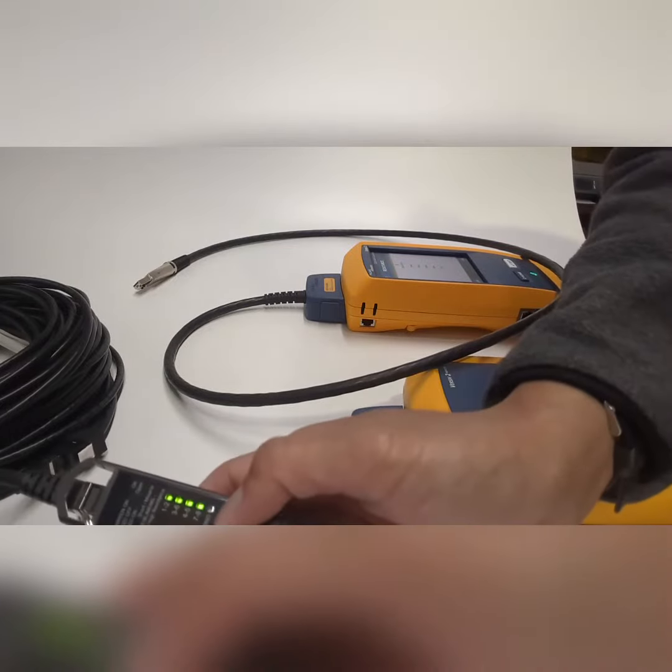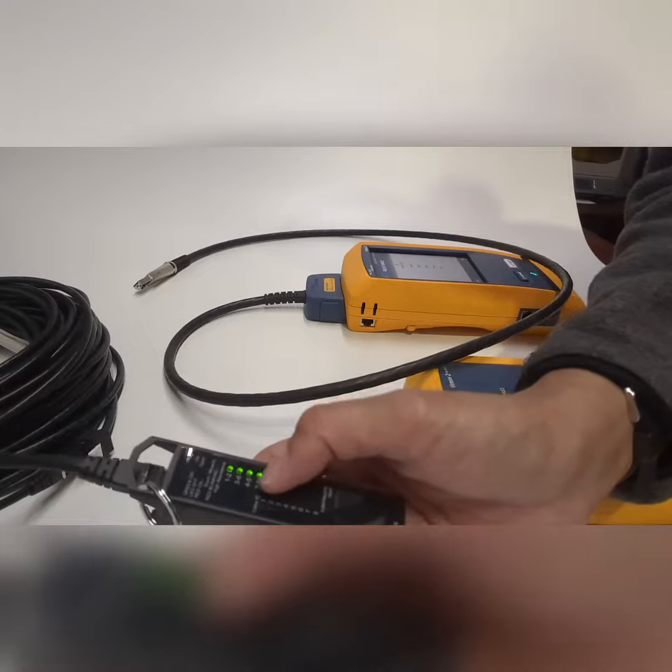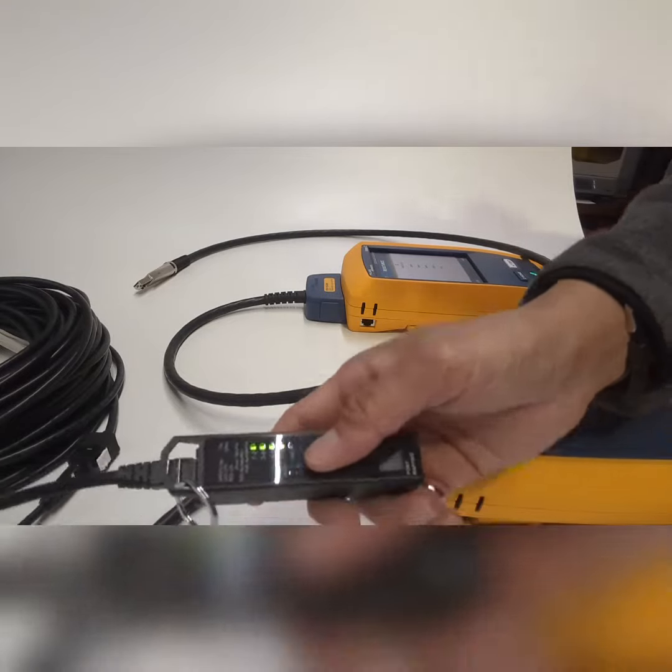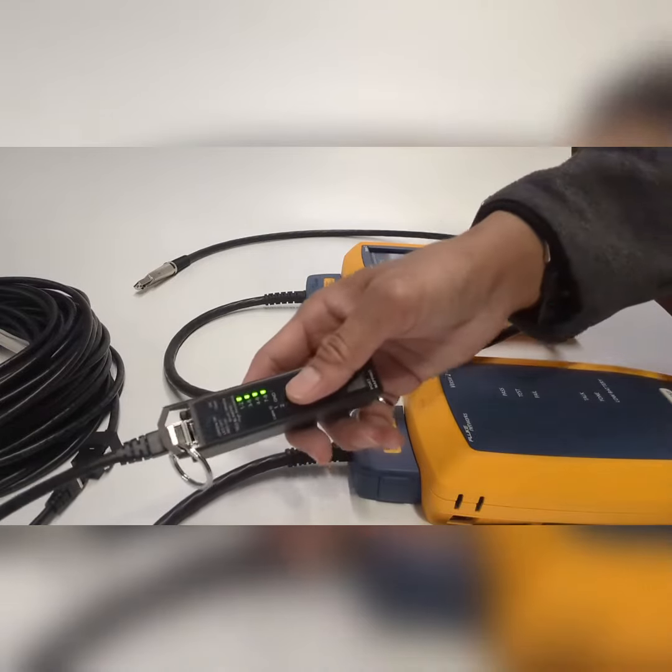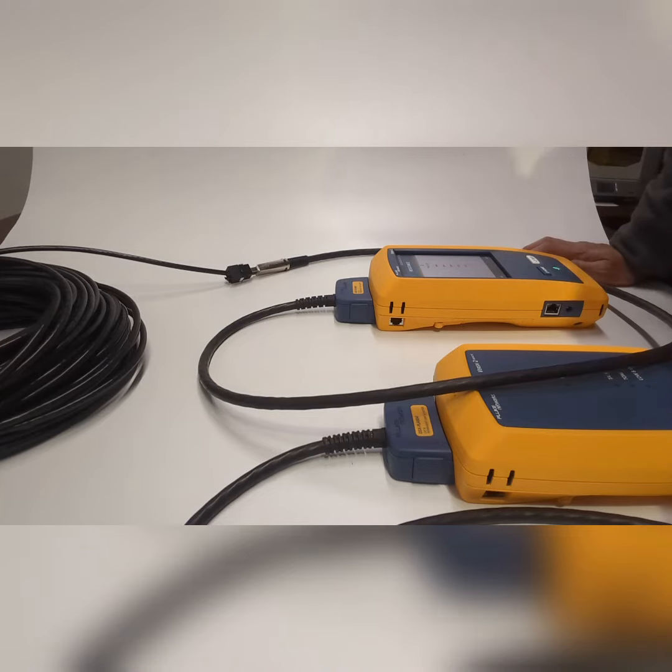See, because this is a UTP cable, the ground is open, but the other four pairs are showing green, so the resistance is okay according to the TIA/EIA.